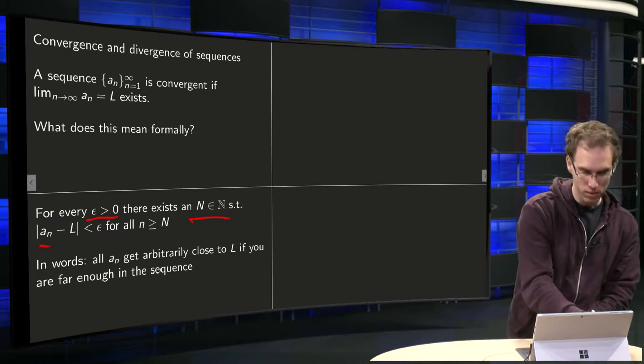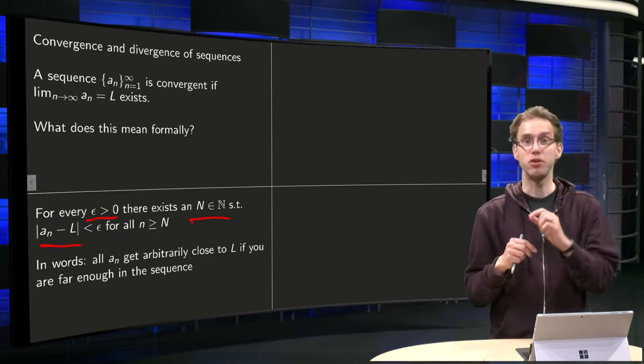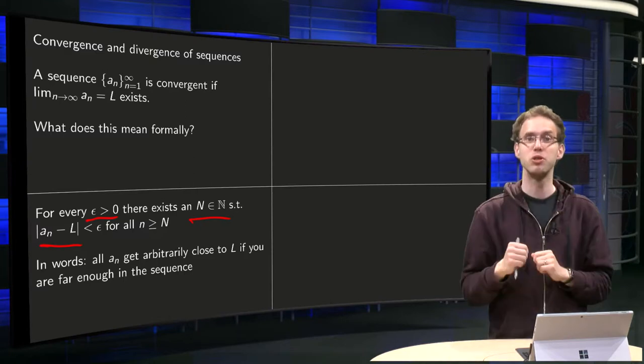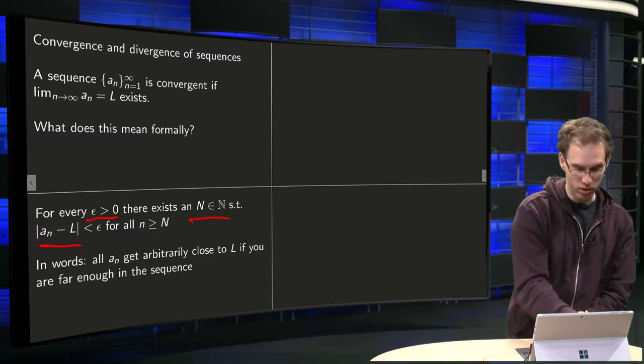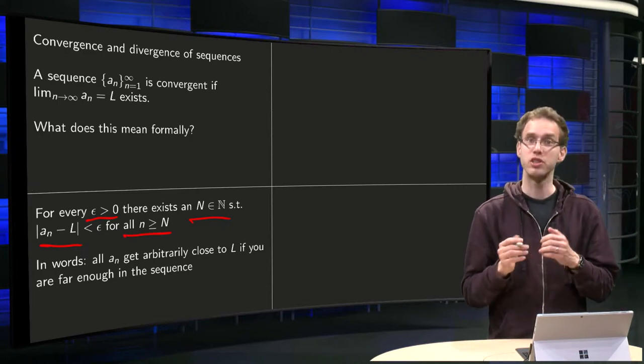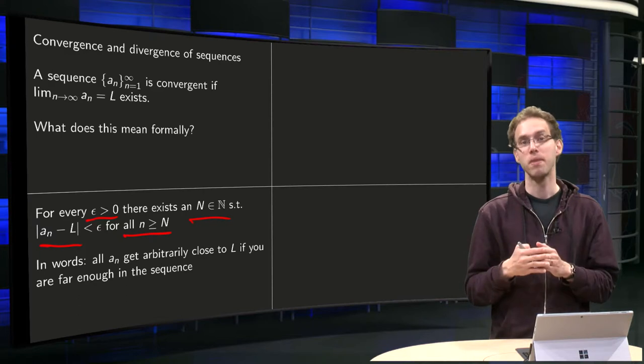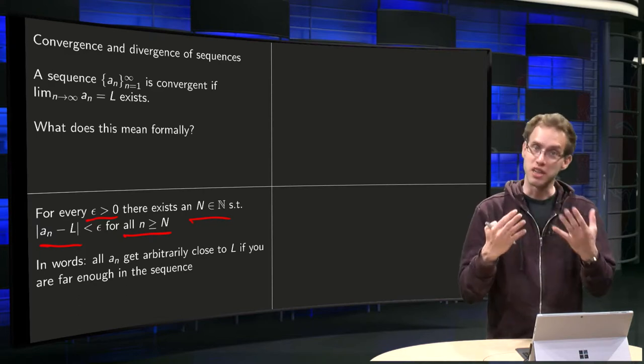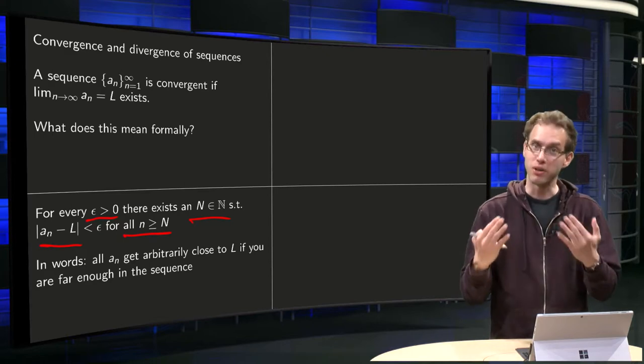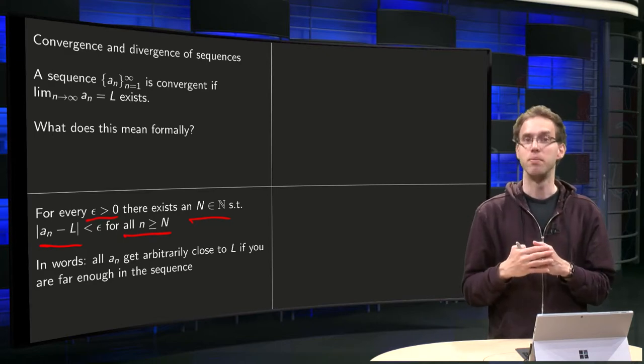Such that the elements of our sequence all get very close, arbitrarily epsilon close to L, provided you take your capital N big enough.